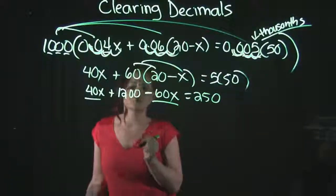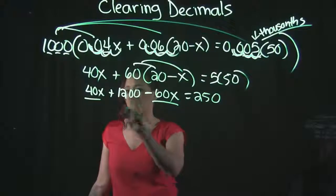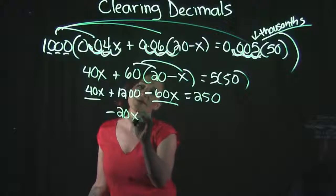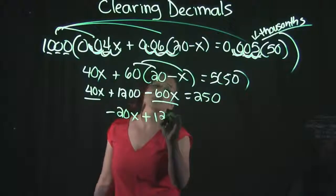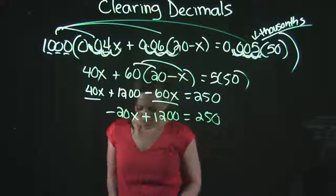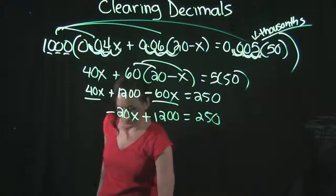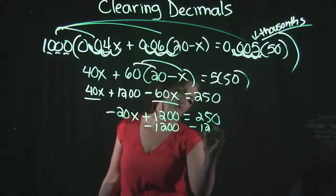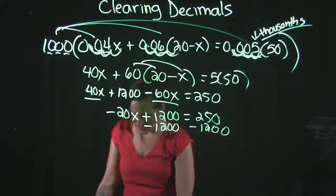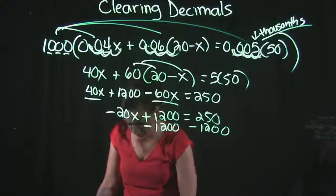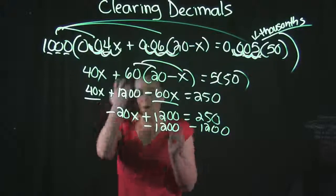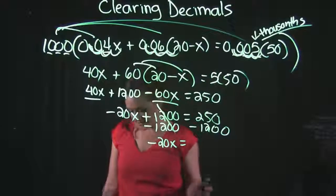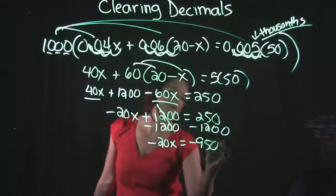On the left-hand side, I'm going to combine like terms. 40x minus 60x does give me negative 20x, and I'm going to drop down the rest of the problem. Since my variable is sitting on the left-hand side, I am going to move my numbers to the right-hand side. So I'm going to take that 250, and I'm going to subtract 1,200 by it. And when I do so, I get that negative 20x is equal to negative 950.